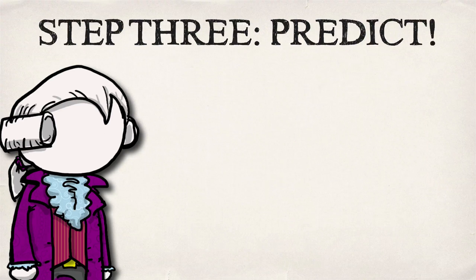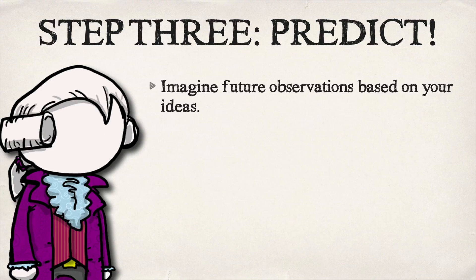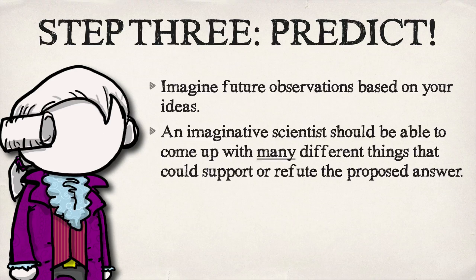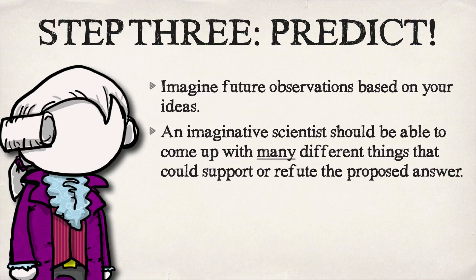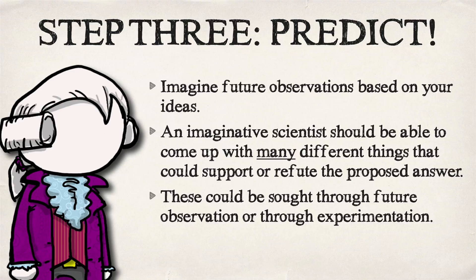Once you've pondered the question and proposed a testable answer, then you will actually predict future observations based on your idea. So: ponder, propose, predict. Prediction, I think, is the most important part. An imaginative scientist should be able to come up with many, many things that a hypothesis could predict. A good hypothesis should be a launch point for dozens of different predictions, which could be sought through future observation or through experimentation.